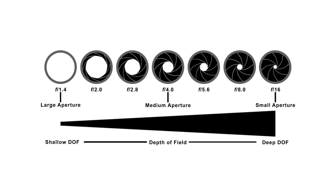These three key settings — focus distance, focal length, and f-stop — work in conjunction to not only alter the zoom and field of view of the camera, but also the strength and quality of the depth of field.